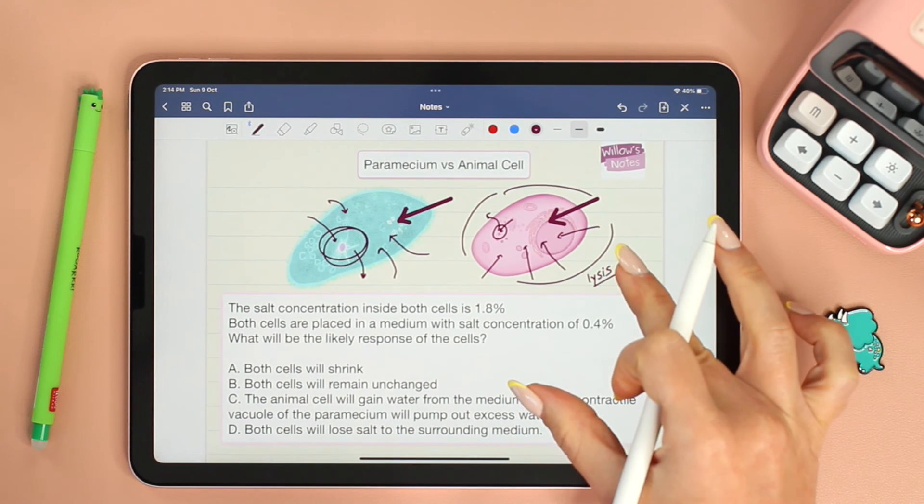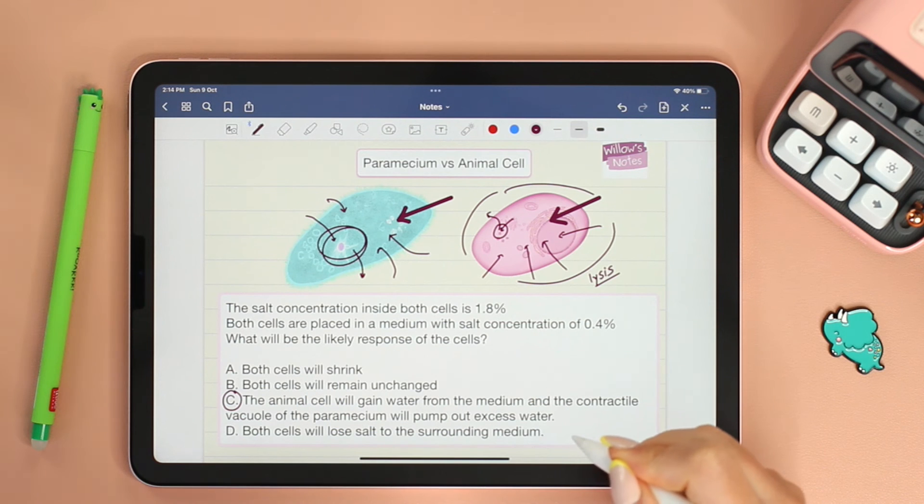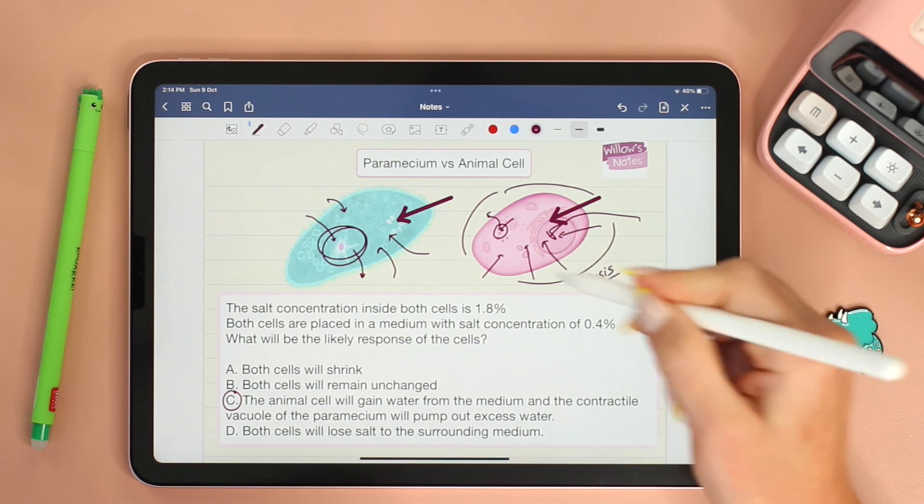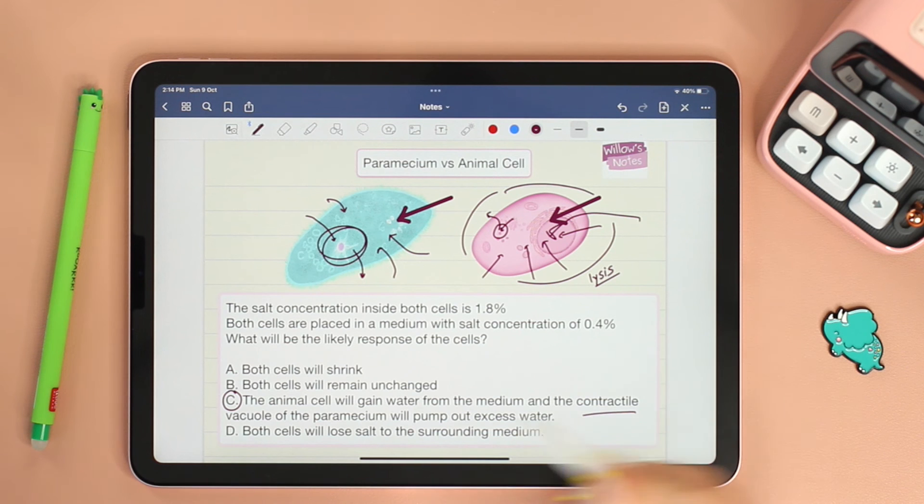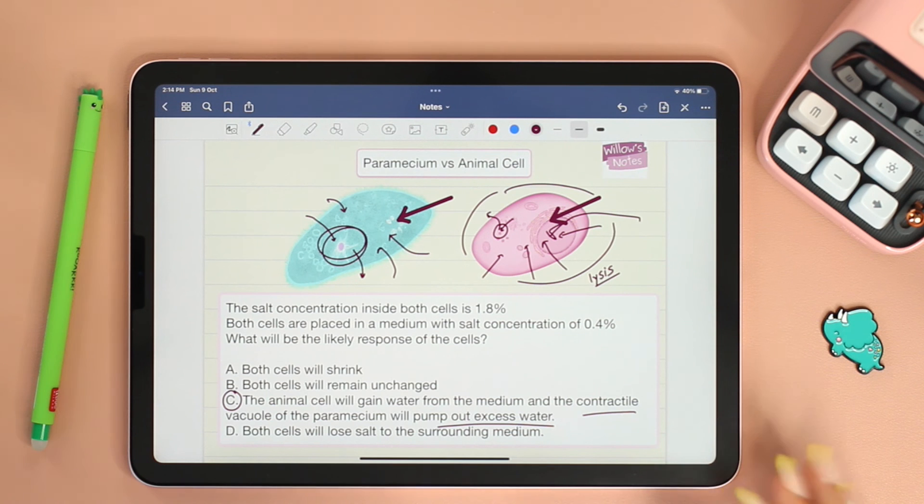Therefore it is clear by now that option C is the correct answer. The animal cell will gain water from the medium and the contractile vacuole of the paramecium will pump out excess water. I hope you found this video easy. If you have any questions, don't hesitate to leave them in the comments down below and I will see you in the next video. Bye!